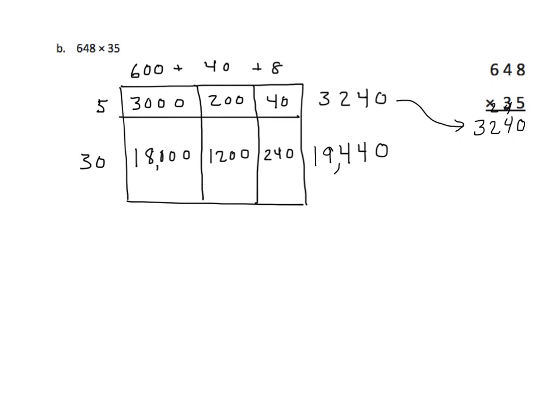Now we'll work with our tens place. So we're going to put in that 0, and I have 3 times 8 is 24. Regroup the 2. 3 times 4 is 12, plus 2 is 14. Regroup the 1. And 3 times 6 is 18, plus 1 is 19. And you can see that again our partial products correspond.